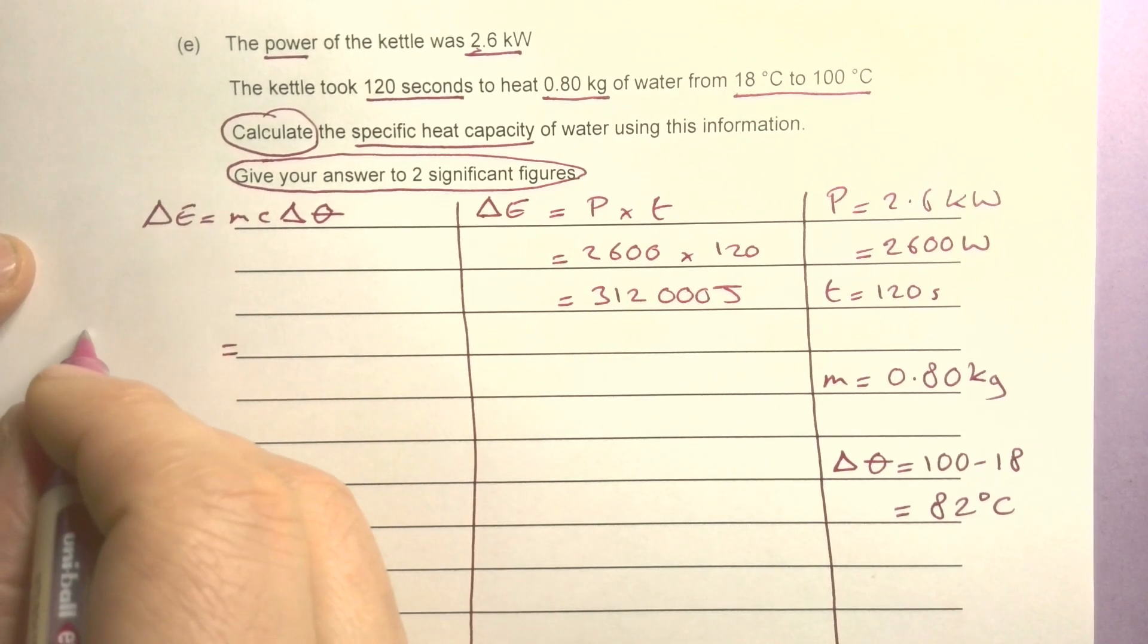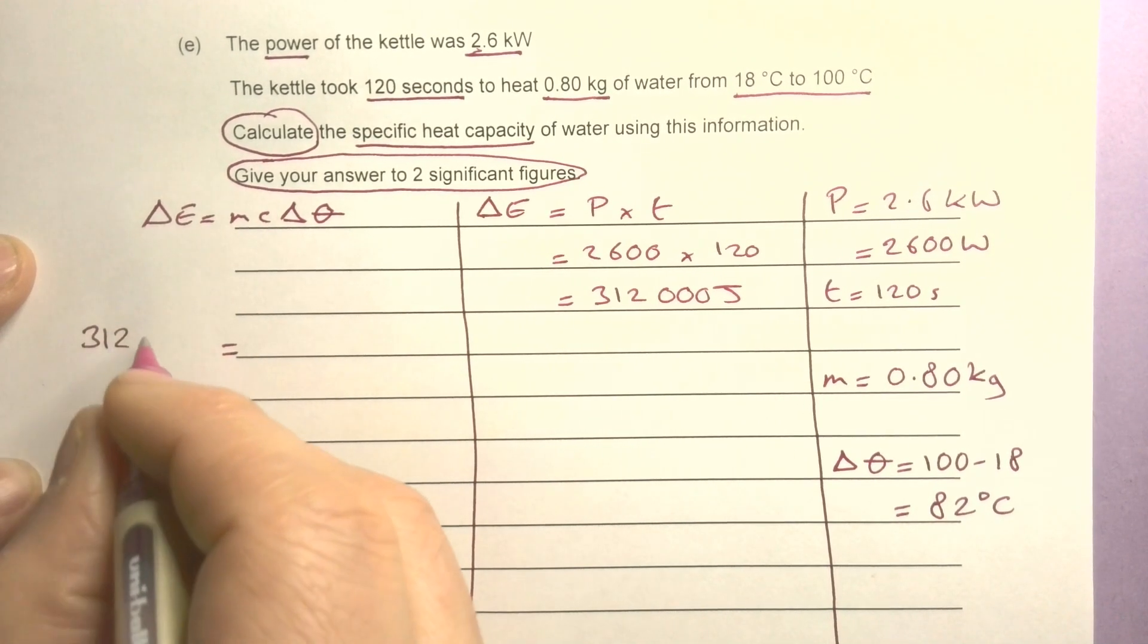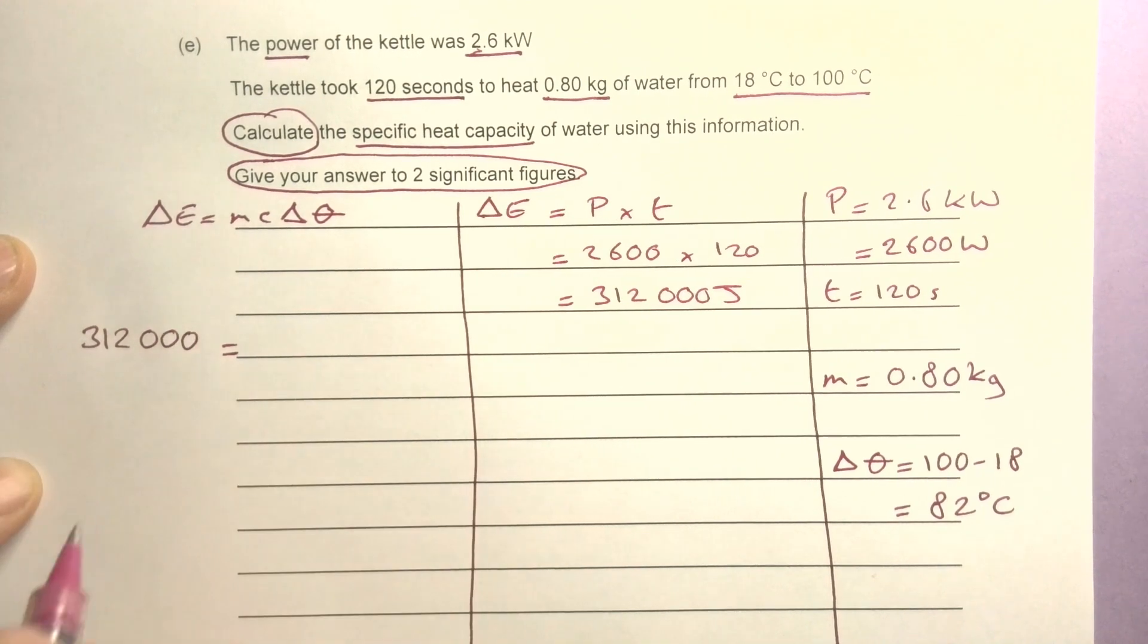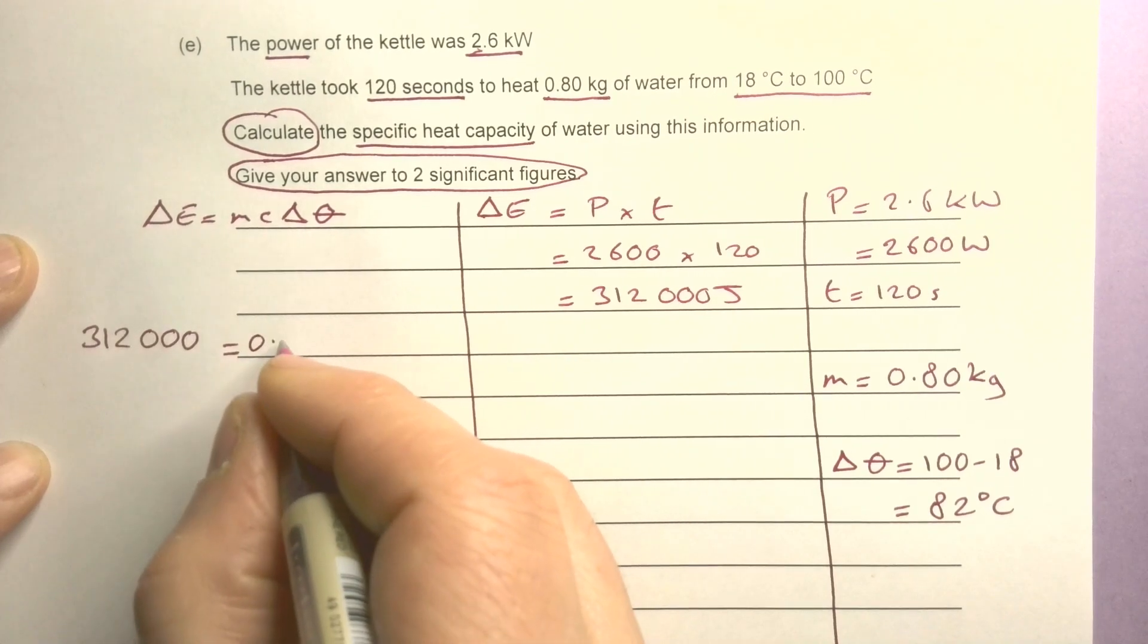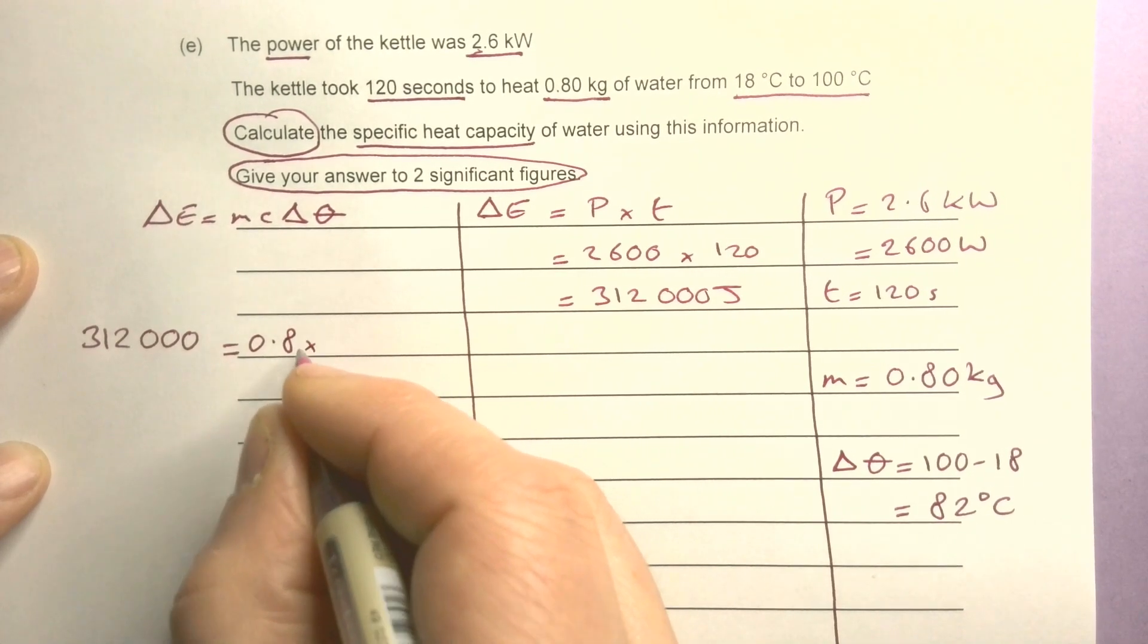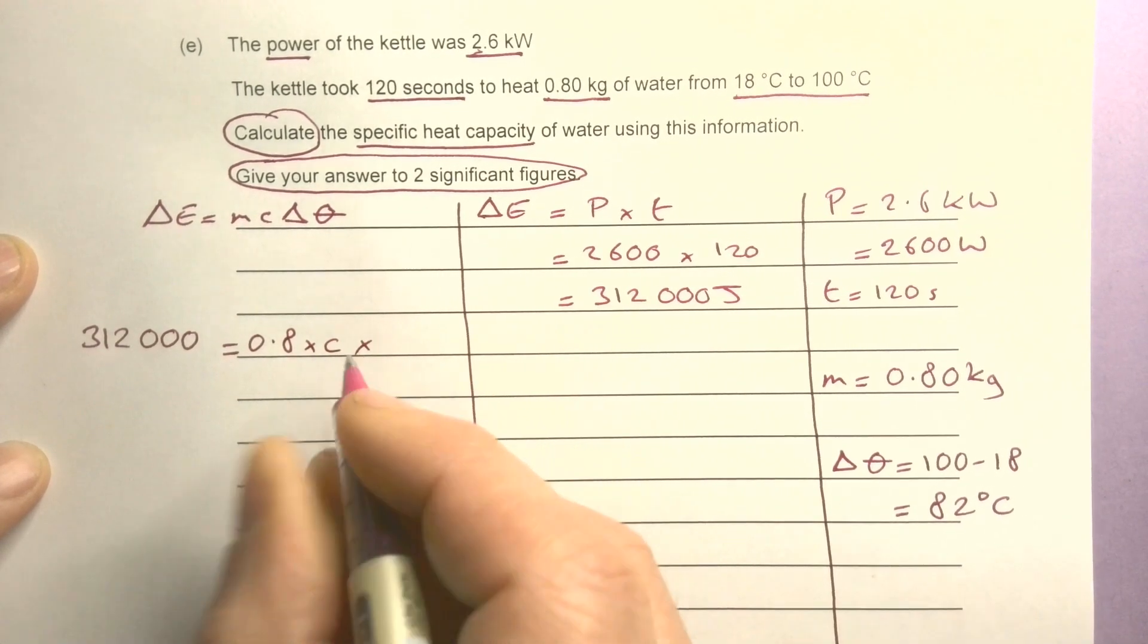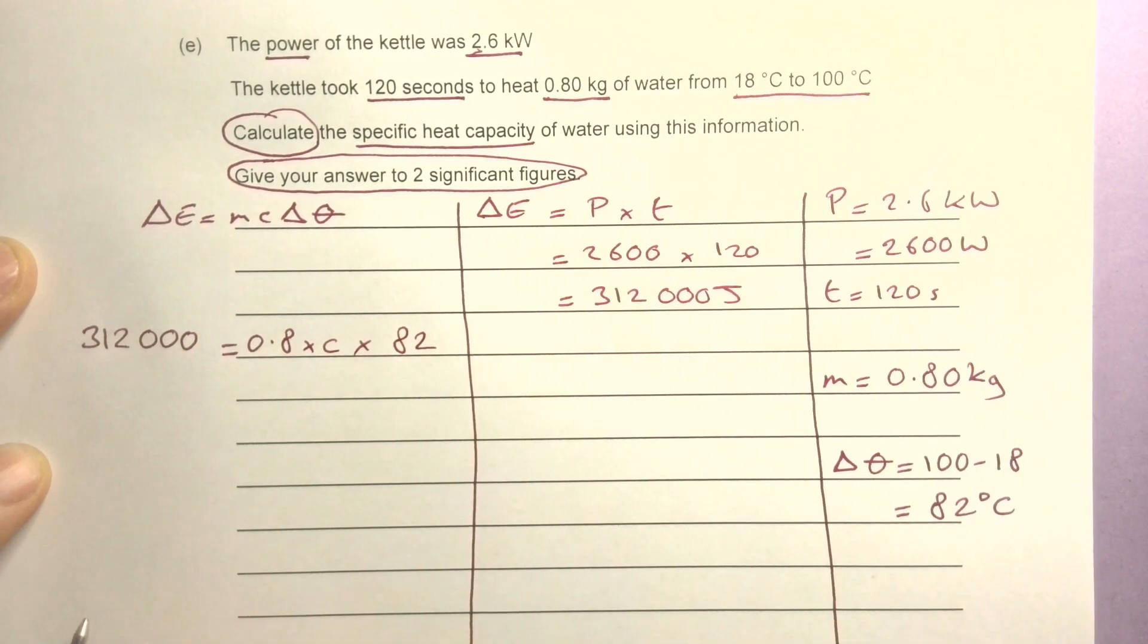I'm going to put those values in now. Probably didn't need to section it off into these bits but that's fine. 312,000 equals mass which is 0.8 times c times 82. I'm trying to find c, remember.